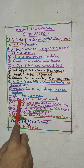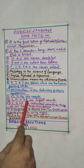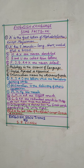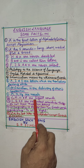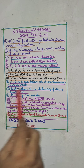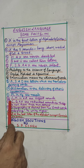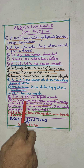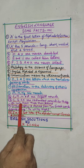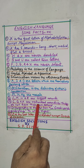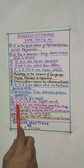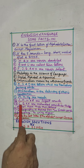L, M, N, and R are liquid sounds — they are flowing like liquid, so these are known as liquid sounds. C, Q, and X are redundant sounds, as they do not have their own sound. They are formed with a combination of two sounds, so these are known as redundant sounds.